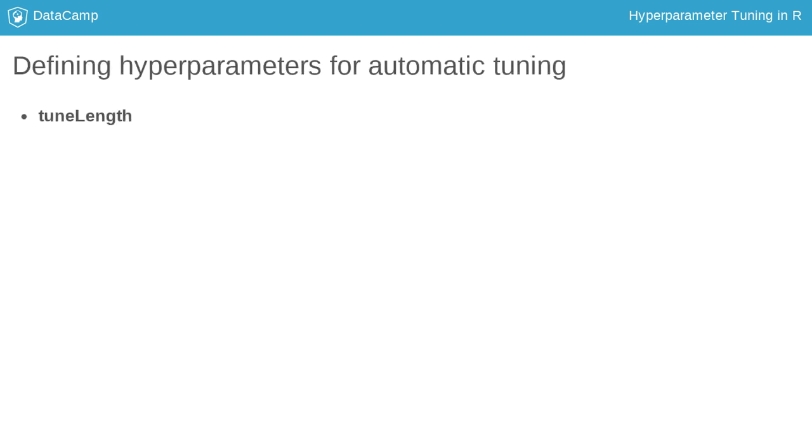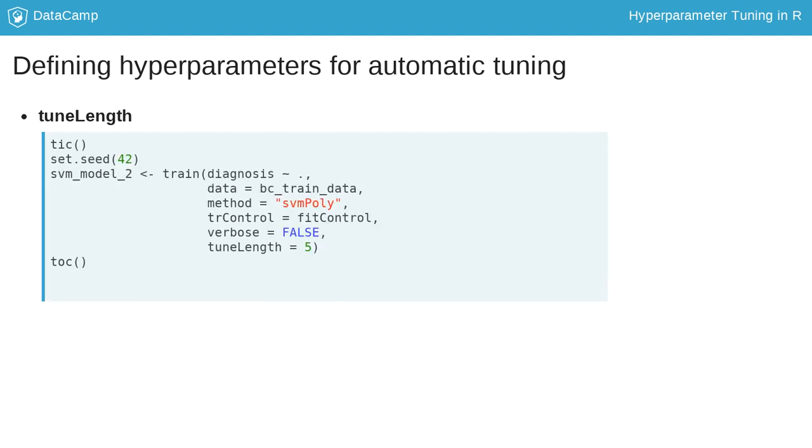We can also set the option tune length to specify the number of different values to try for each hyperparameter. For example, 5. Now, Caret tries all possible combinations of five hyperparameters. Degree being 1, 2, 3, 4 or 5.